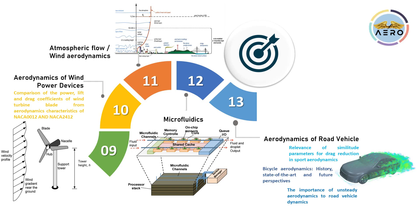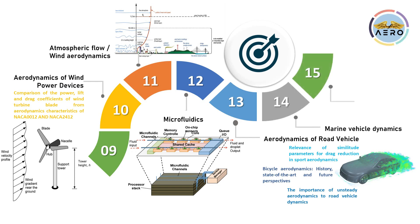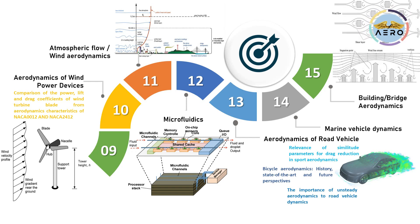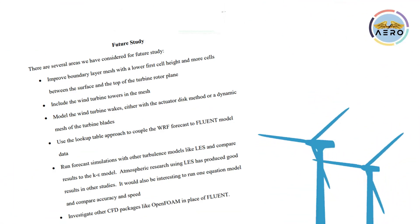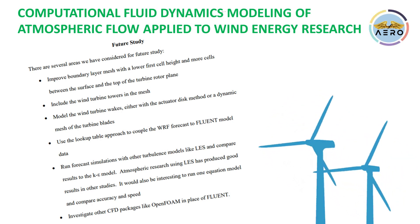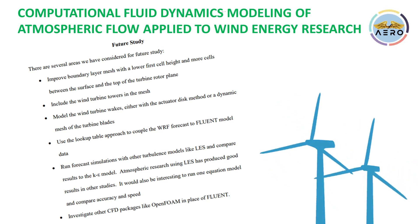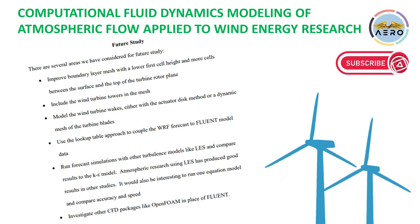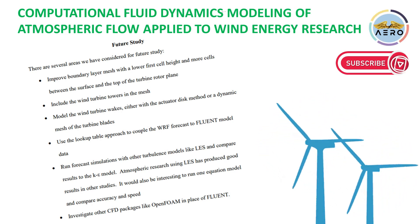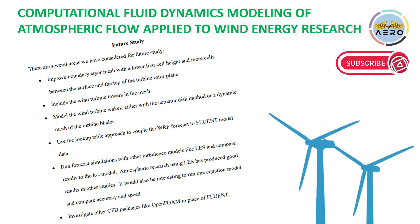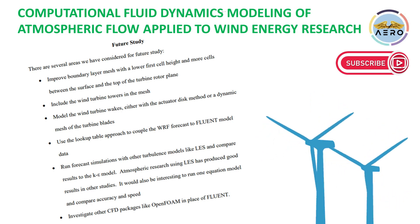Aerodynamics of road vehicles like sports cars, high-speed trains, and bicycles are industrial applications with active research — for example, relevance of similarity parameters for drag reduction in sports aerodynamics or the importance of unsteady aerodynamics to vehicle dynamics. Even marine vehicle dynamics and bridge dynamics are active areas. All individual topics are I-shaped; combining blade dynamics with atmospheric flow and experimental fluid mechanics falls under T-shaped professional work.